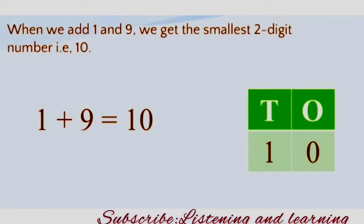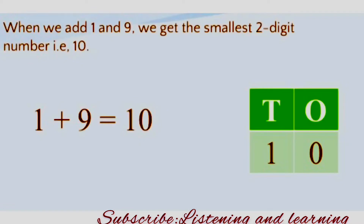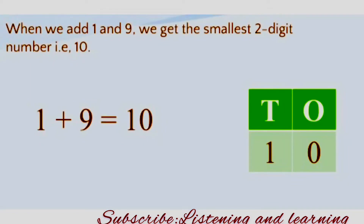When we add 1 and 9, we get the smallest two-digit number. What is the smallest two-digit number? That is 10. 1 plus 9 equals 10. How we write that? You can see in green color O and T. O means ones and T means tens. Under the ones place we write 0 and under the tens place we write 1.